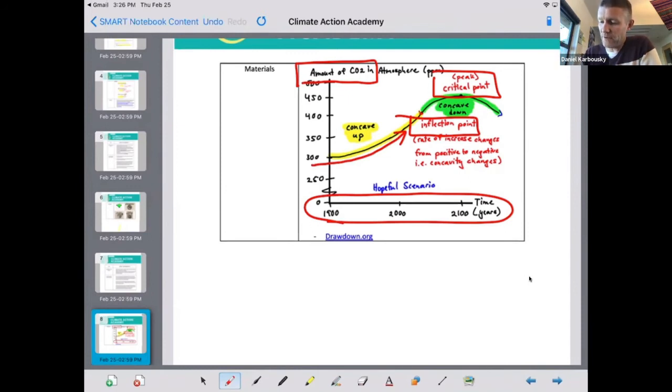And so we can talk about that as being concave up. And we need to basically hit an inflection point where it's maybe still going up, but the rate at which it's going up, it's starting to slow down until we hit a critical point, which is the peak, and then it would start to drop. So this is a hopeful scenario that we hope to achieve, but it also gives across this calculus vocabulary that we would need to teach.